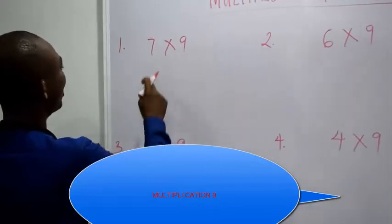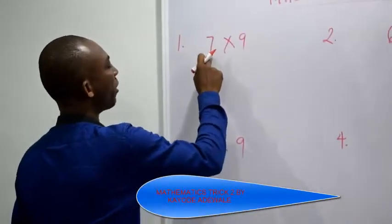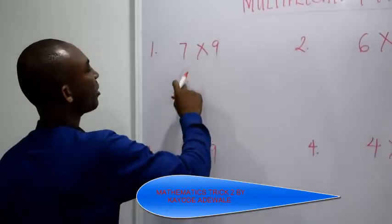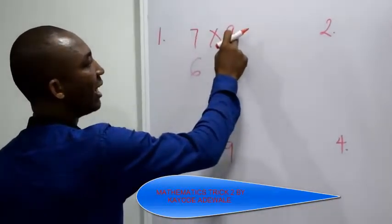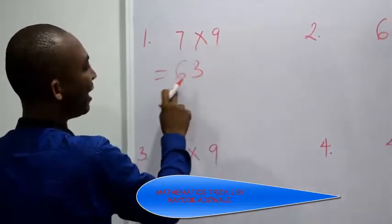What you need to do is to take 1 away from this 7. If I take 1 away from 7, that will give me 6. The difference between 6 and 9, that is 3. So 7 multiplied by 9 is 63.